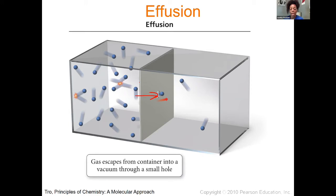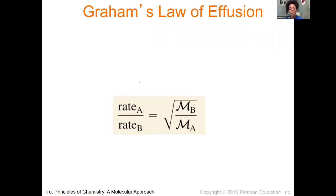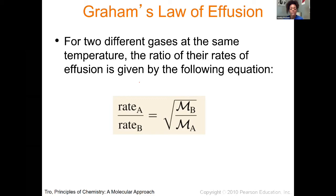If you wanted to calculate the rates of effusion, you would use this equation here where you're looking at the rate of one substance compared to the rate of the other is equal to the square root of the inverse of their molar masses. You would just simply plug in some numbers here. For two different gases at the same temperature, the ratio of their rates of effusion is given by this equation.